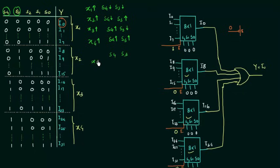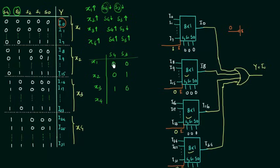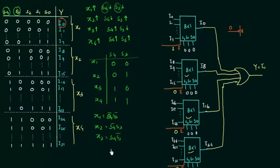From the table we can derive: x1 = S4' · S3', x2 = S4' · S3, x3 = S4 · S3', and x4 = S4 · S3. You can clearly see we require four AND gates to implement this logic. We need NOT gates to generate S4 complement and S3 complement, then AND the appropriate combinations to produce x1 through x4.